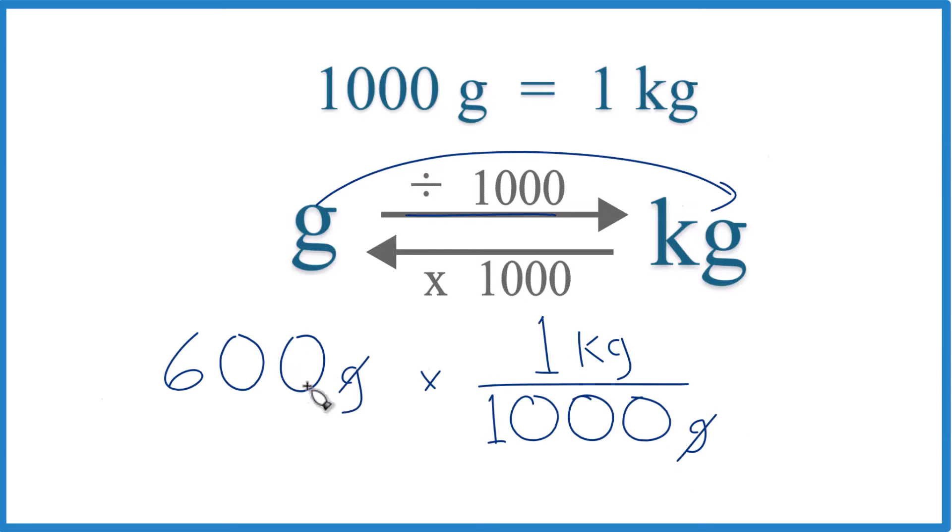Grams on the top and bottom, they cancel out. 600 times 1 kilogram, that's 600 kilograms, divided by 1,000, 0.6 kilograms. This is Dr. B, converting 600 grams to kilograms. Thanks for watching.